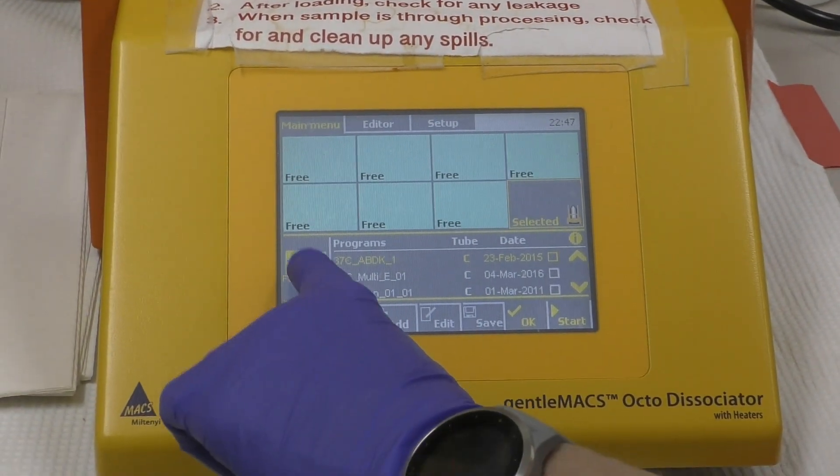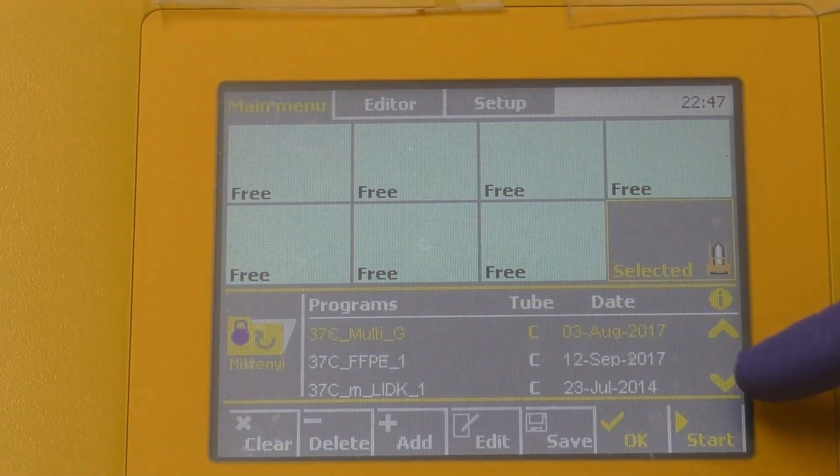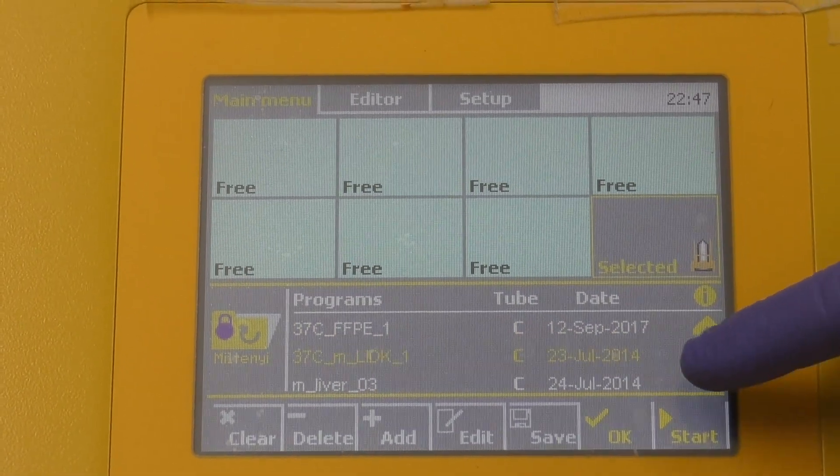Next, go to either the Favorites folder if your program is in there, or the Miltenyi folder. Scroll down until you find your program.